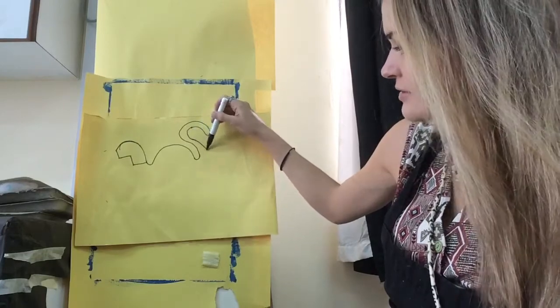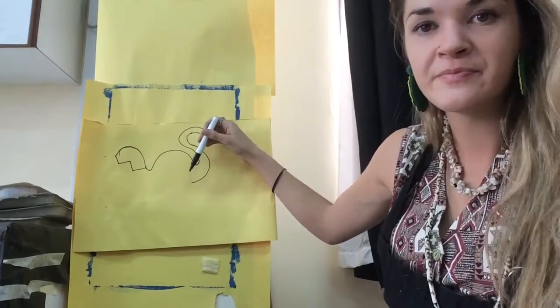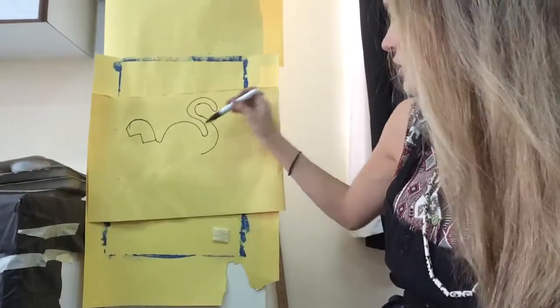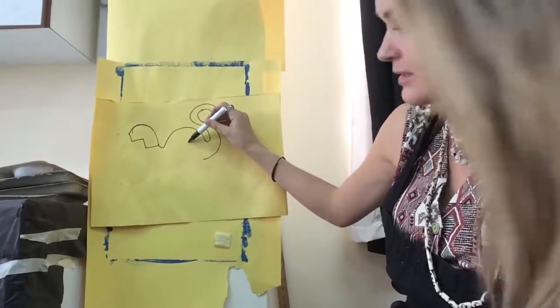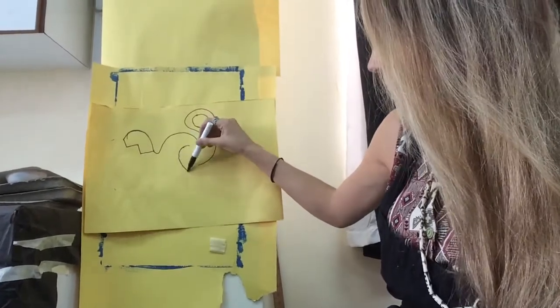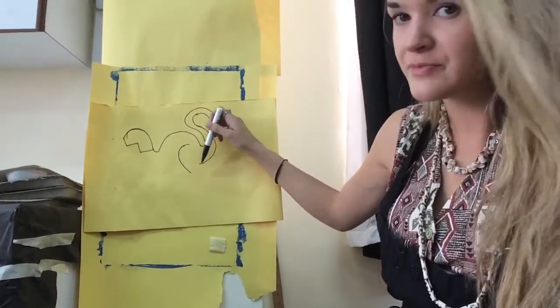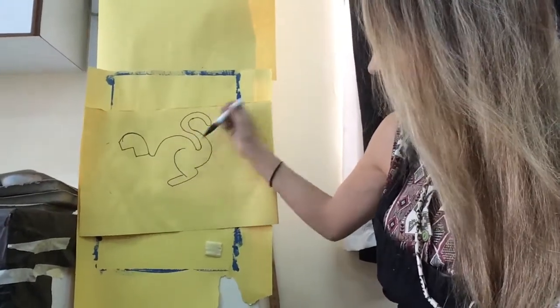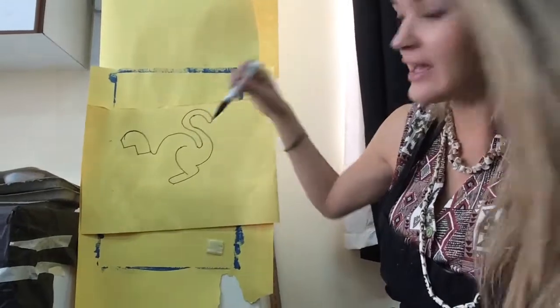And then down. Now I'm going to do the kitty's nose, curving like this. Then I'm going to do the cat's foot. There's the cat's first leg.